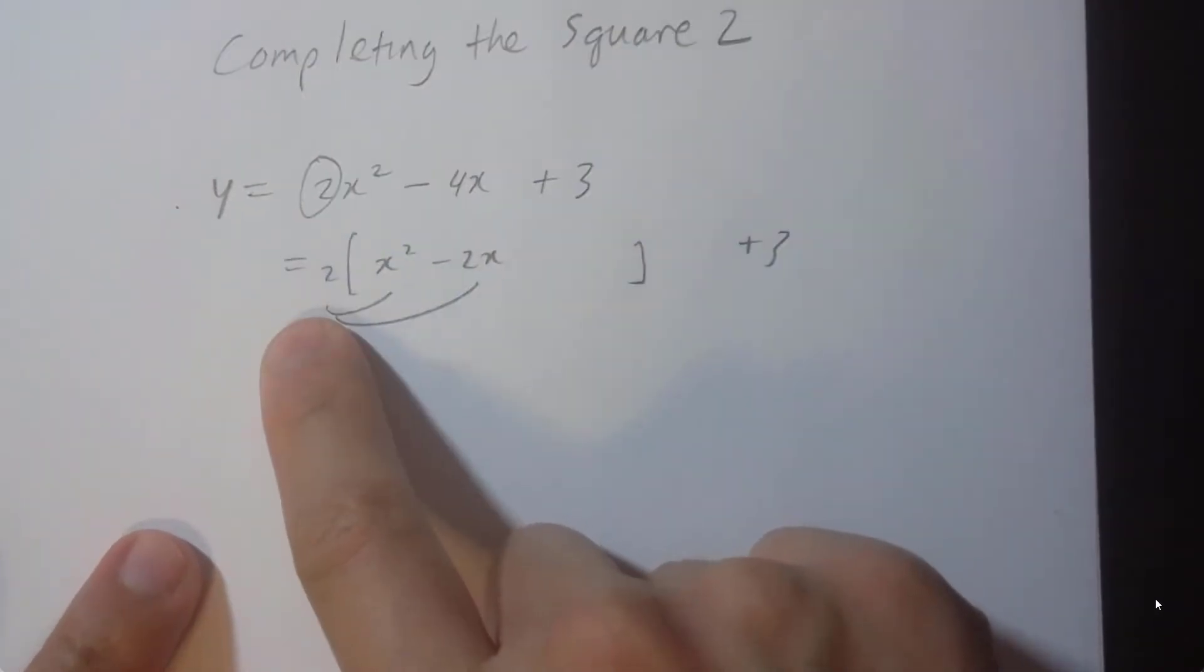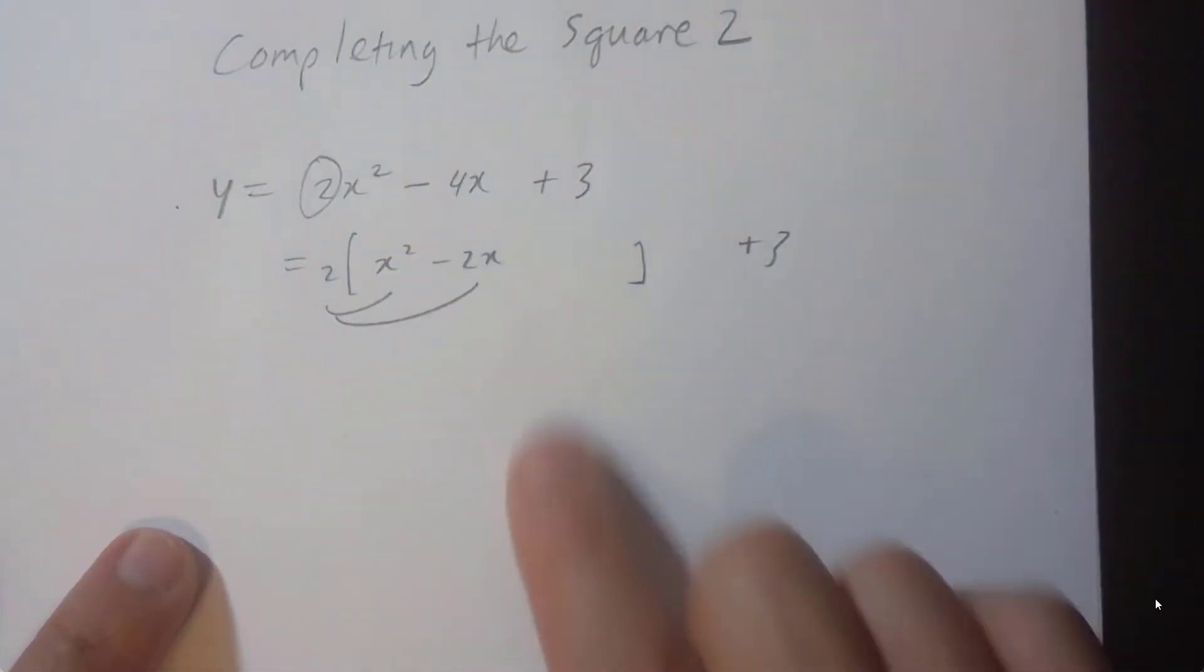2x squared, 2 times negative 2 is going to be negative 4, and that's negative 4x because 2 times negative 2x.